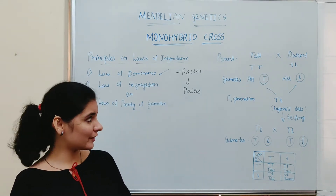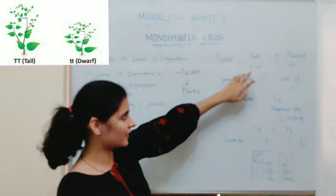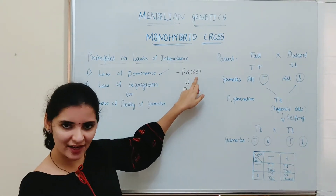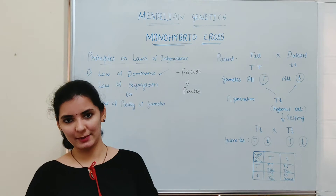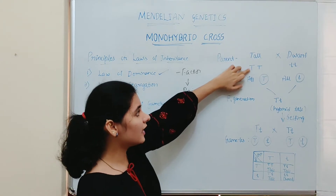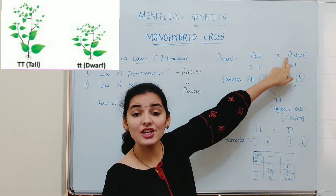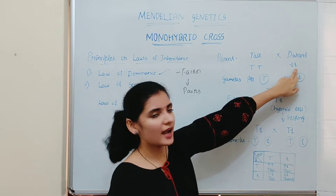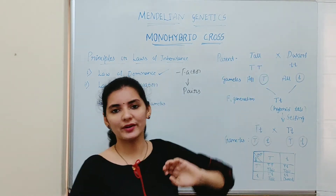If you consider the example of monohybrid cross by taking the character as stem height, stem height has mainly two contrasting forms — that is tall and dwarf. According to Mendel, there is a discrete unit known as a factor which is responsible for the expression of tallness as well as dwarfness in the plant. He used English alphabets to depict that factor: capital T to depict tallness and small t to represent the dwarf character. So capital T, capital T and small t, small t are the factors responsible for the expression of tall and dwarf character respectively.